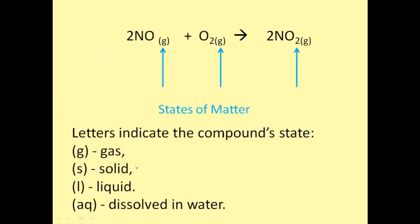In the equation, the letters written beside each substance represent the state of matter that substance is in. For example, (g) represents a gas. In this equation, both the reactants and the product are gases. (s) is the symbol for solid, (l) is the symbol for liquid, and (aq) or aqueous means that the substance is dissolved in water when it reacts.